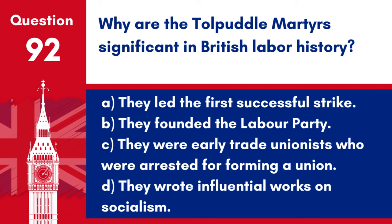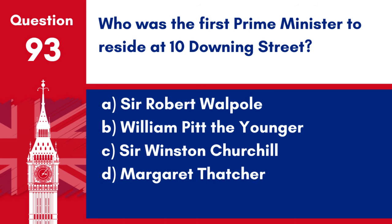Question 92. Why are the Tolpuddle Martyrs significant in British Labour history? a. They led the first successful strike. b. They founded the Labour Party. c. They were early trade unionists who were arrested for forming a union. d. They wrote influential works on socialism. Answer: c. The Tolpuddle Martyrs are significant for their role in the early trade union movement, leading to their arrest and subsequent pardon, symbolising a foundational moment for Labour rights in Britain.